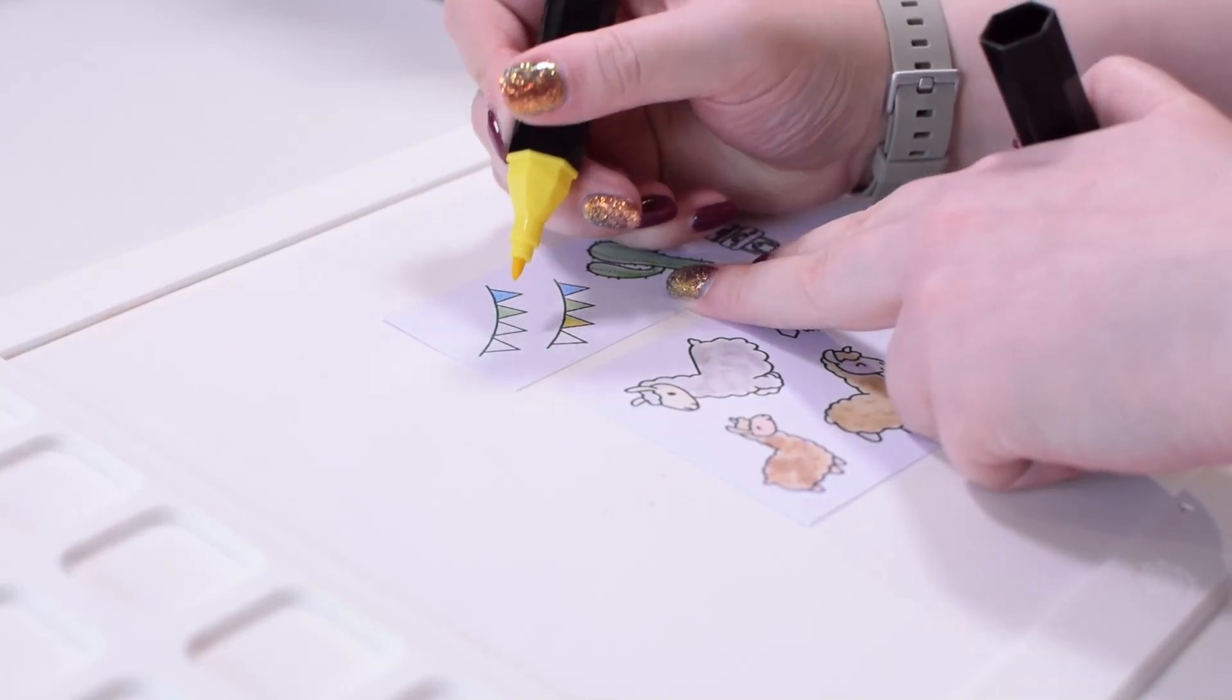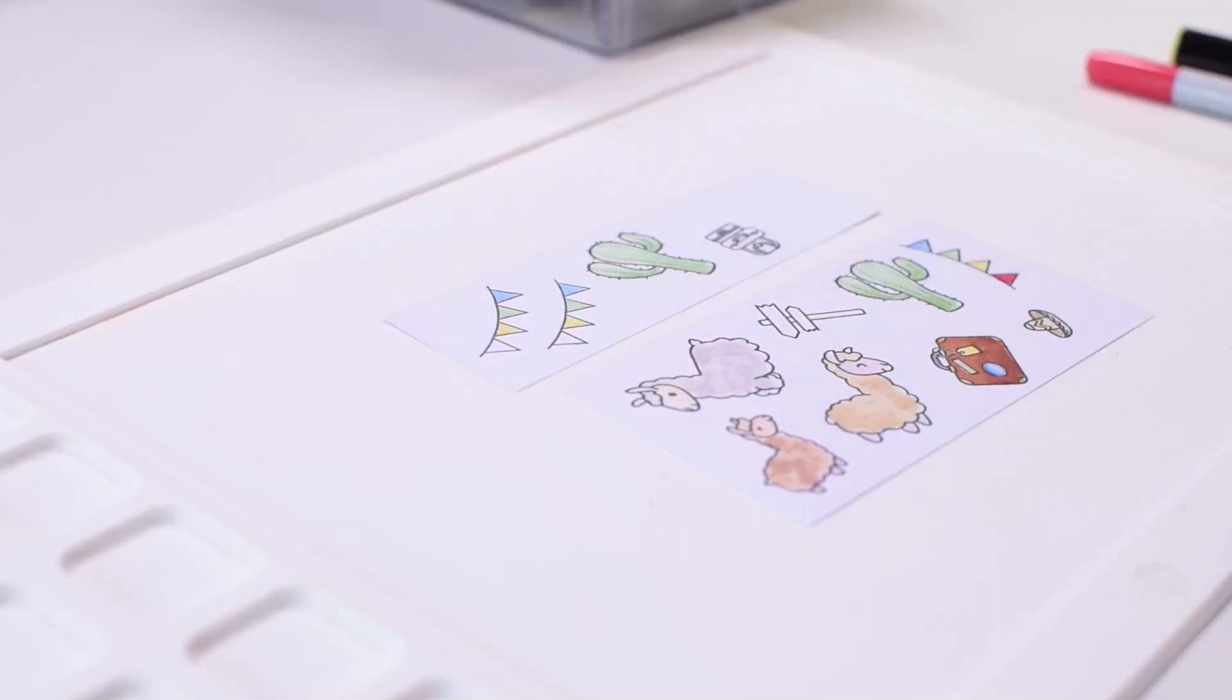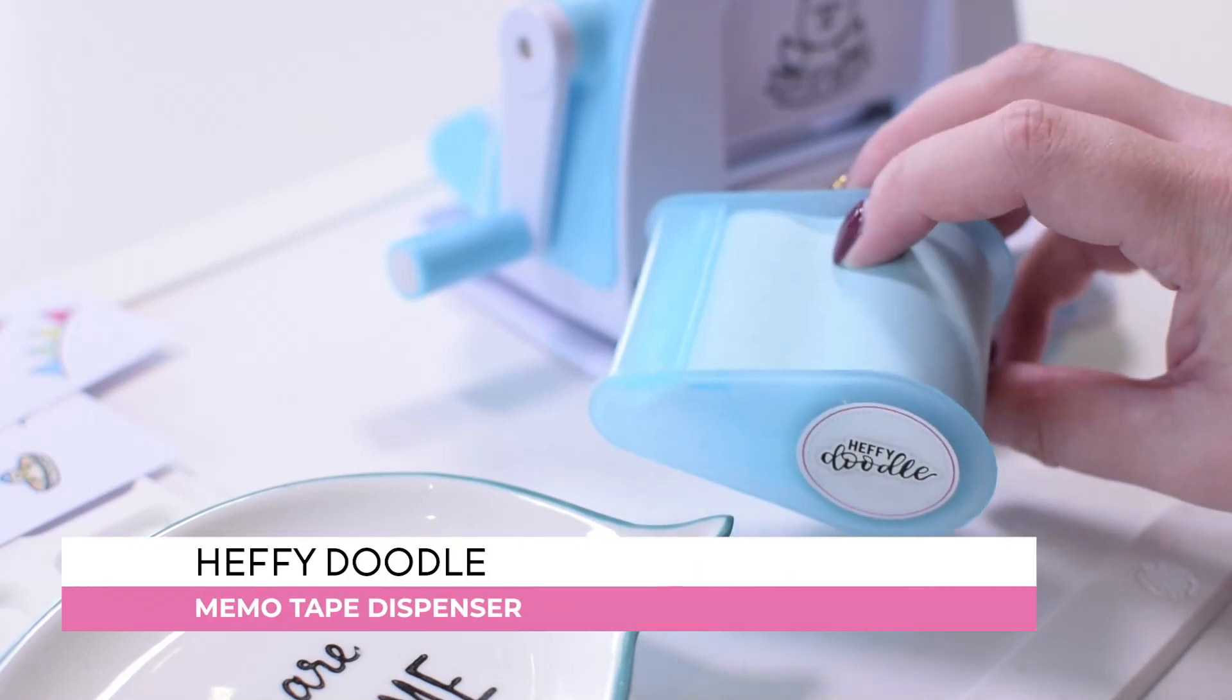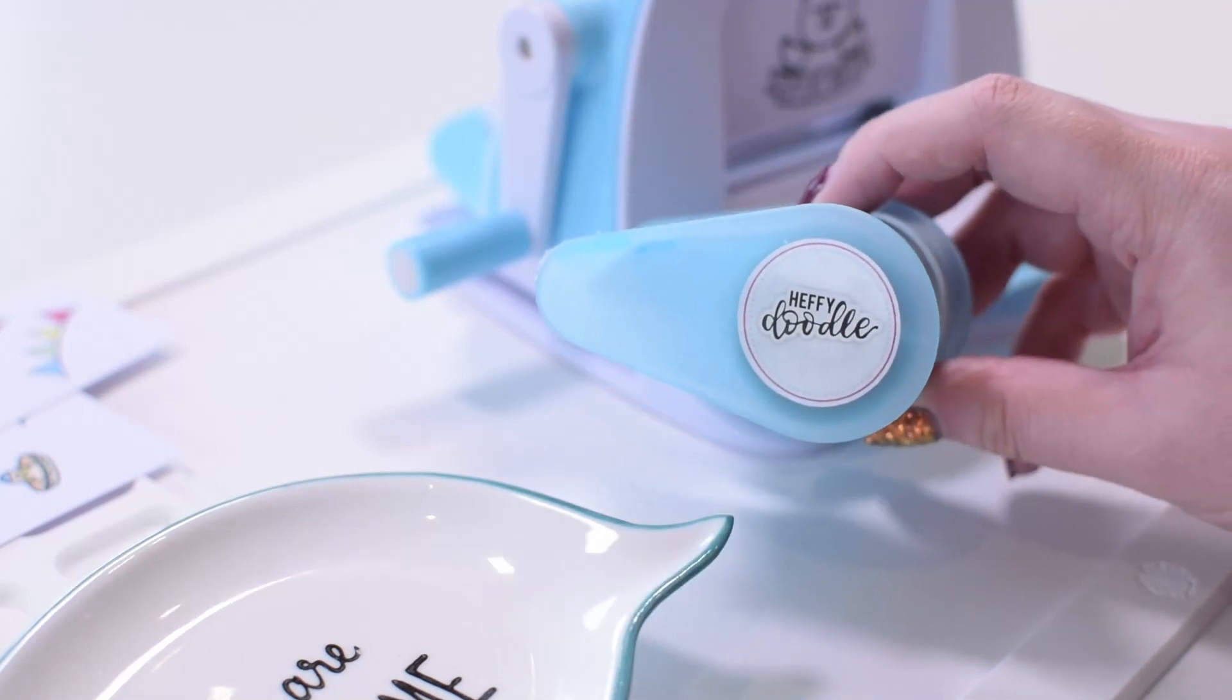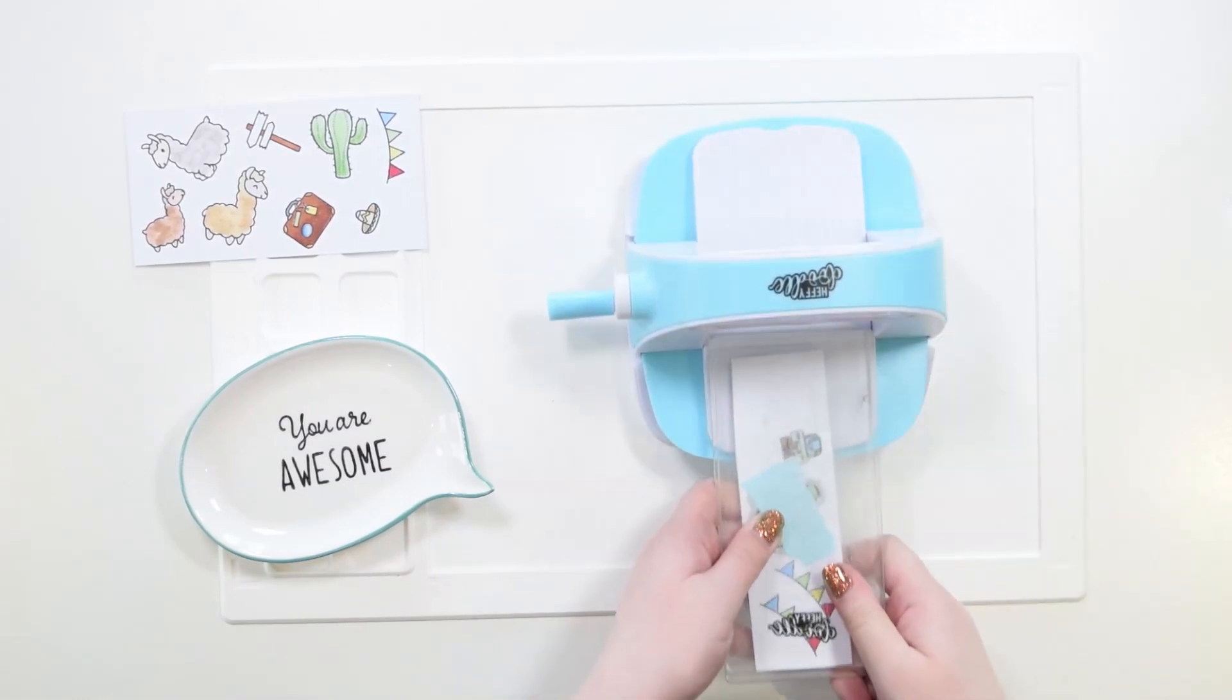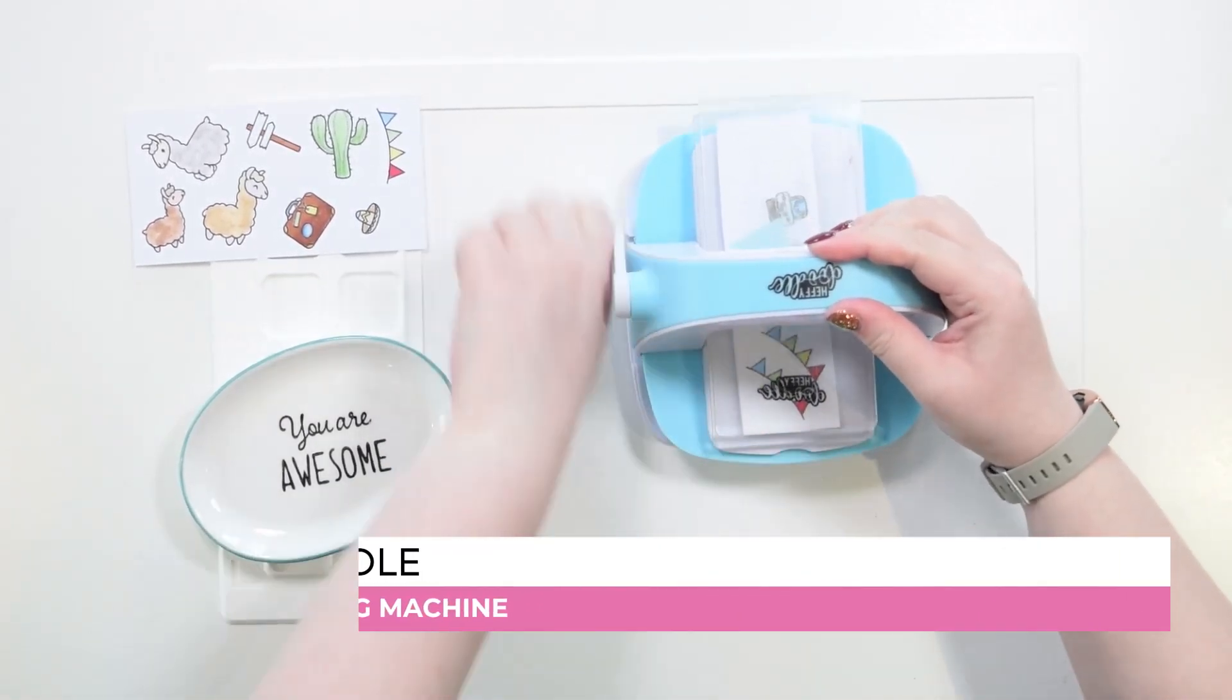To die cut these, I'm gonna use my Heffy Doodle memo tape to hold the dies and my alcohol marker friendly cardstock to the A plates, and then I'm running everything through the Heffy Doodle mini die cutting machine.